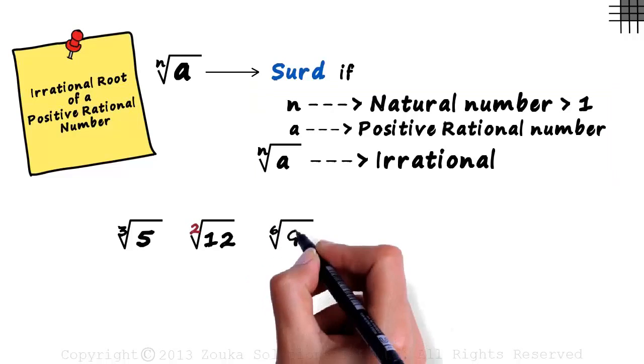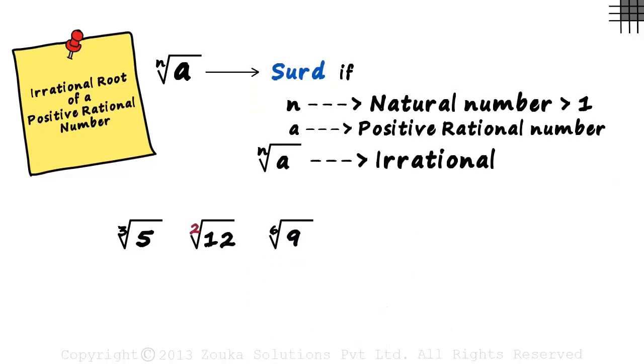What about the sixth root of 9? Is it a SIRD? Well, the order is a natural number greater than 1. The base is a positive rational number and the result will be an irrational number. That makes it a SIRD.